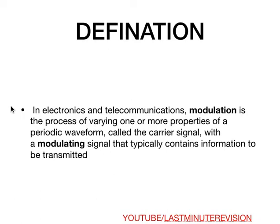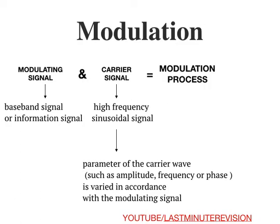A modulating signal consists of a baseband signal or information signal — so whatever information is there, it consists of this modulating signal. And to carry this signal from one place to another we use a carrier signal. With the help of the carrier signal we can transfer the modulating signal, and this process is called the modulation process.